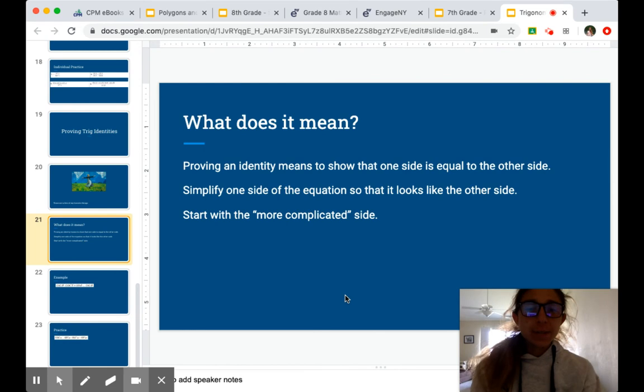So what does it mean to prove an identity? Proving an identity means to show that one side of an equation is equal to the other side. And so we do that by simplifying one side of the equation so that it looks like the other one.